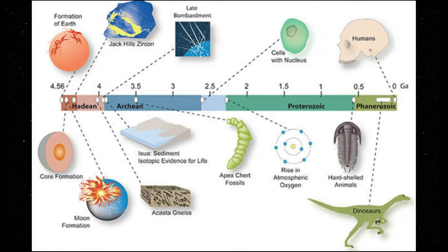To put that age in perspective, the Earth itself formed 4.5 billion years ago as a ball of molten rock, meaning its crust formed relatively soon thereafter — about 100 million years later. The crystal's age also means the crust appeared just 160 million years after the formation of the solar system. This suggests the early Earth was not as harsh as many scientists thought, and this dating strengthened the theory that Earth had liquid water by 4.3 billion years ago, perhaps capable of sustaining microbial life.